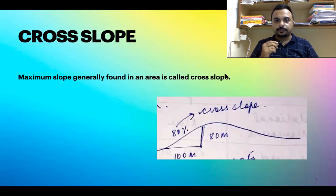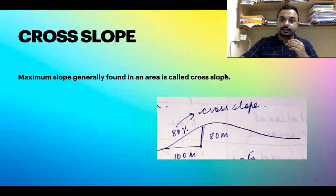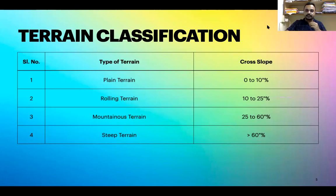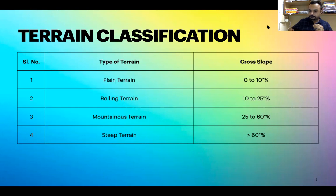The terrain of a particular area may be determined depending on the cross slope. For plain terrain the cross slope is 0 to 10%. For rolling terrain it is 10 to 25%. For mountainous terrain it is up to 60%, and if it is more than 60% the terrain is classified as steep terrain.